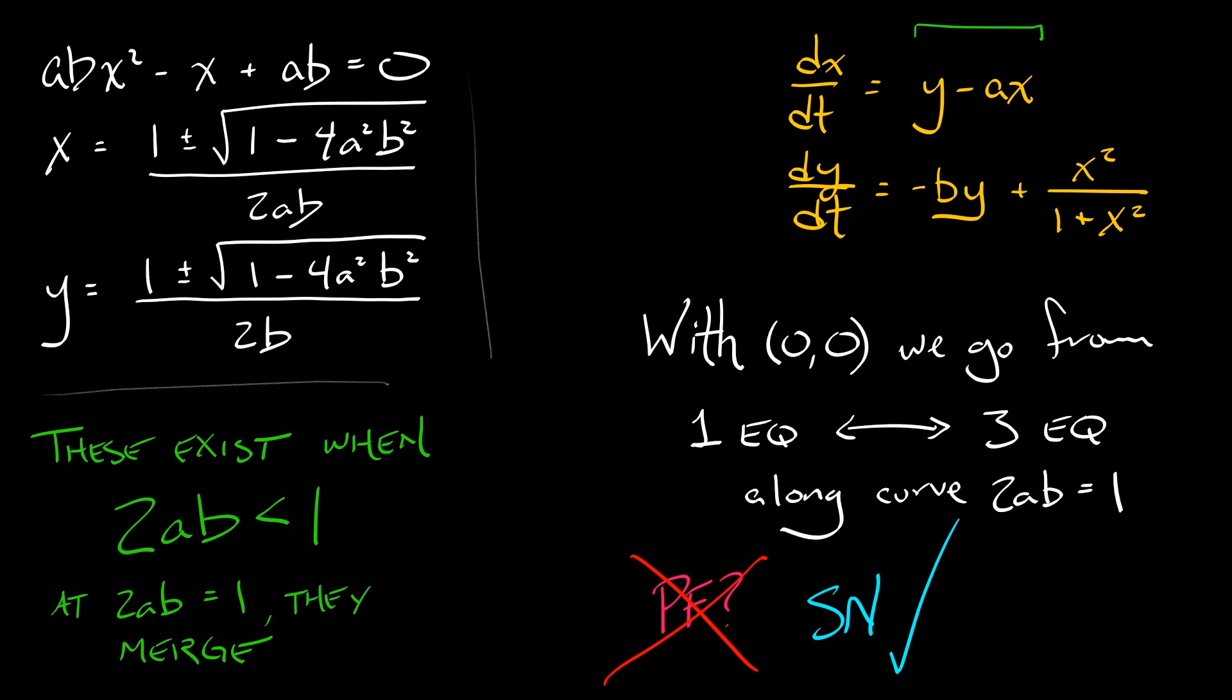Why is that? Let's take a look at what happens to this pair of equilibria when they collide into each other. Are they colliding into each other at the origin? No. When the term under that square root vanishes, we get 1 over 2ab for x and 1 over 2b for y. Both of these quantities are non-zero because a and b have to be positive parameters. So we really have a curve of saddle node bifurcations separate from where the origin is.